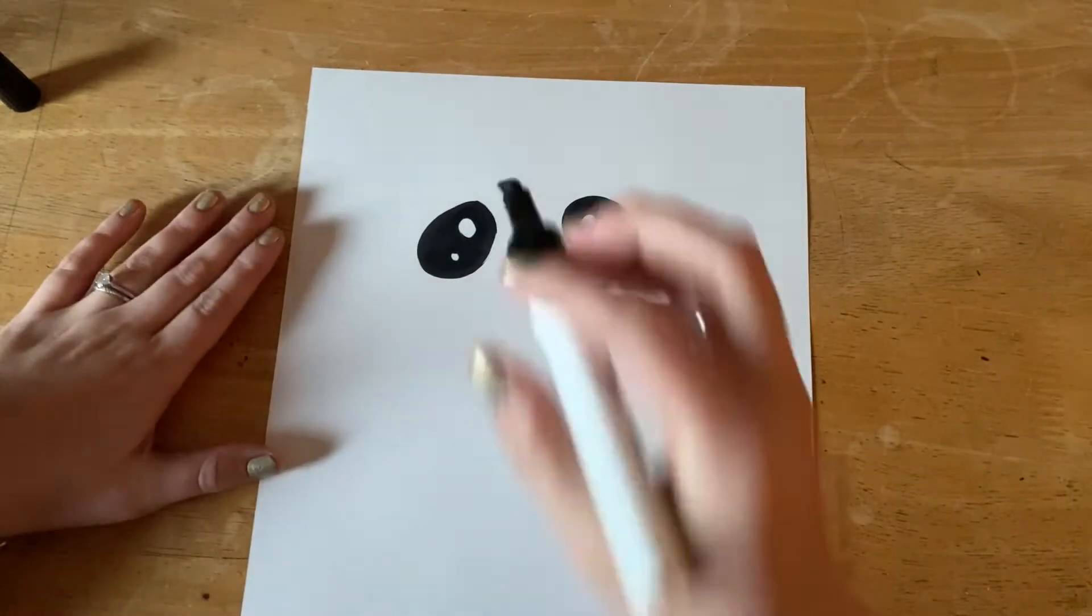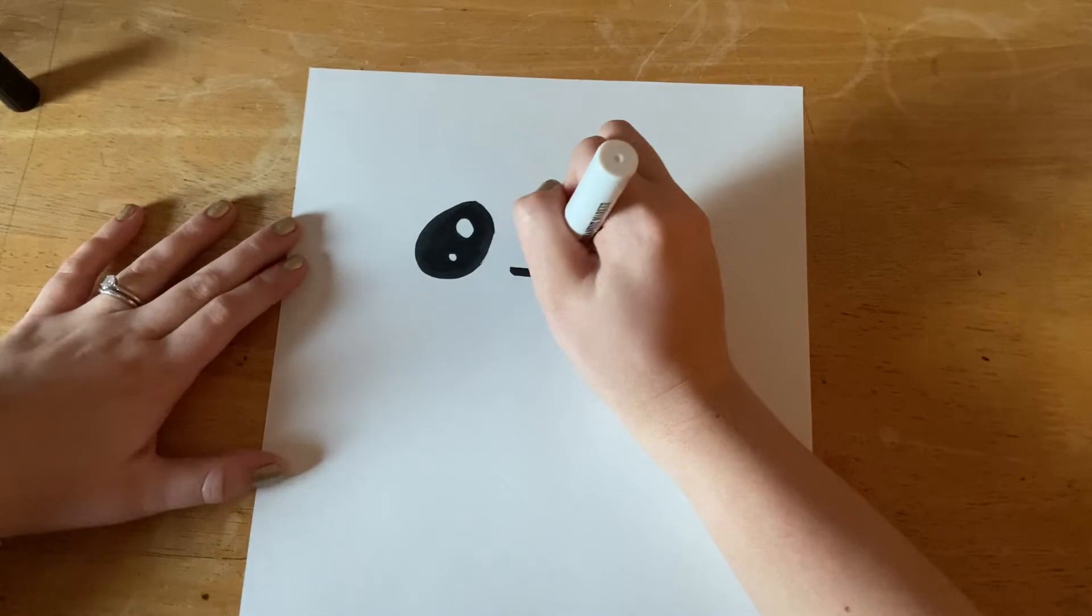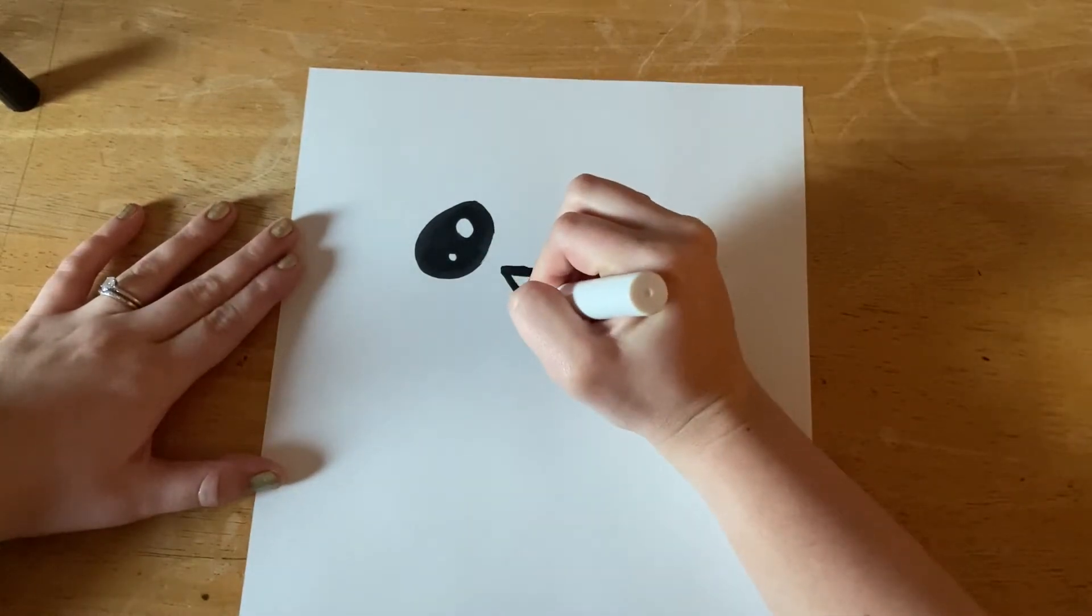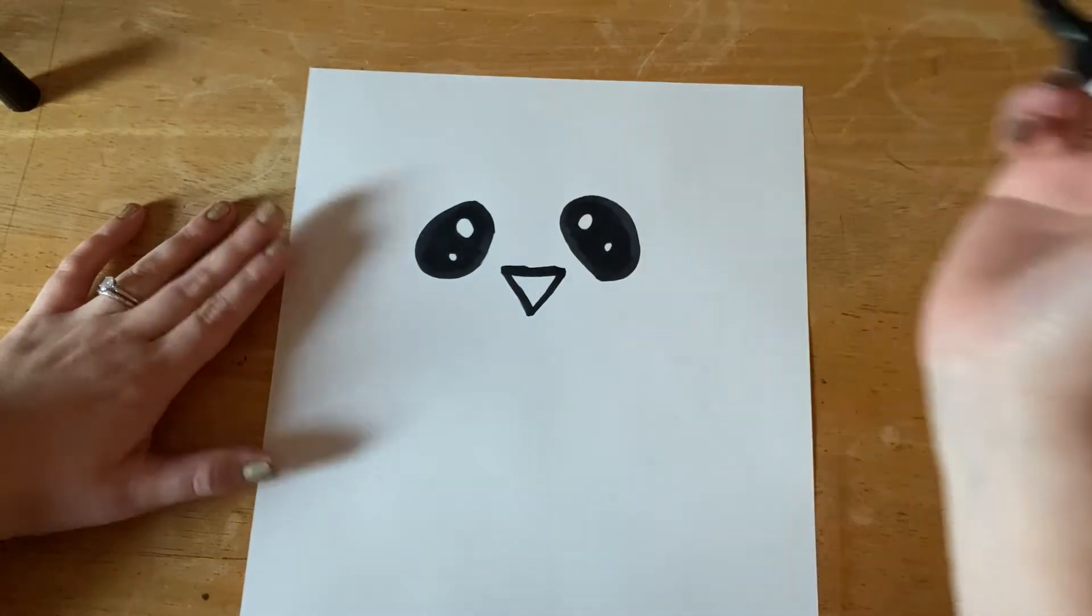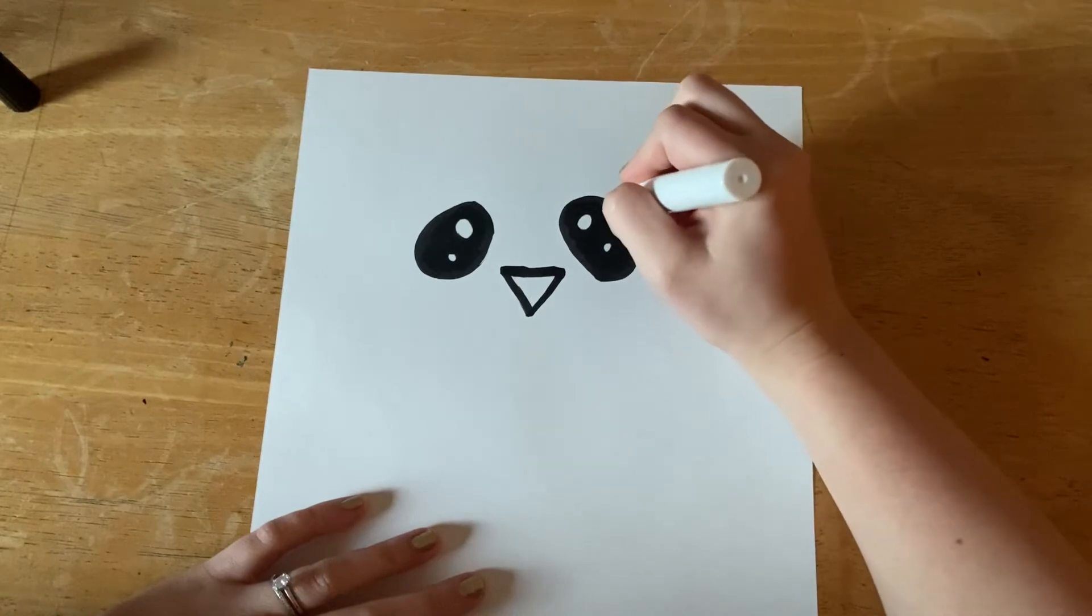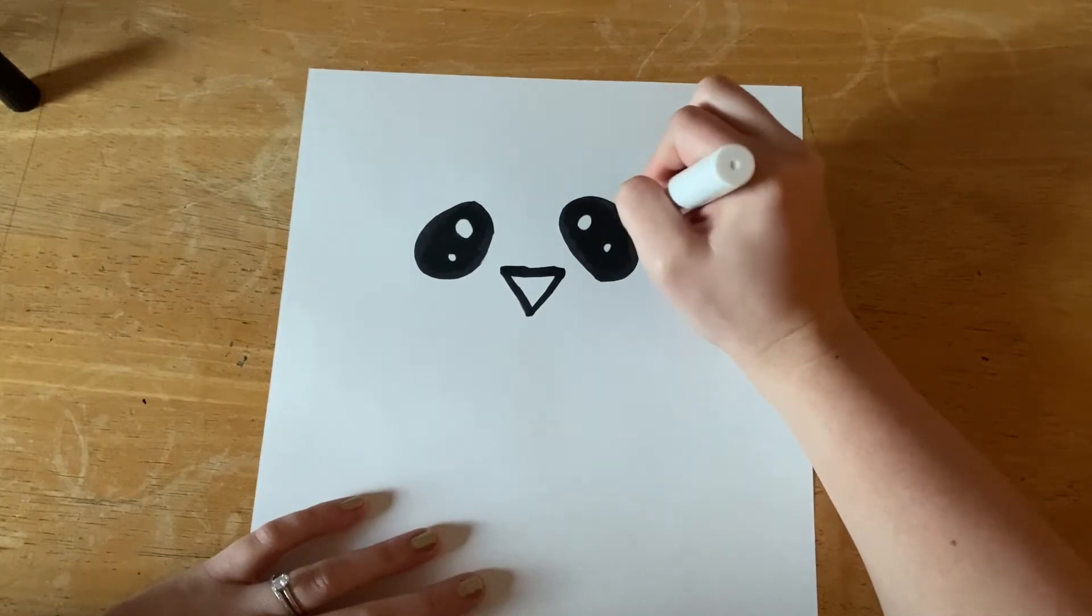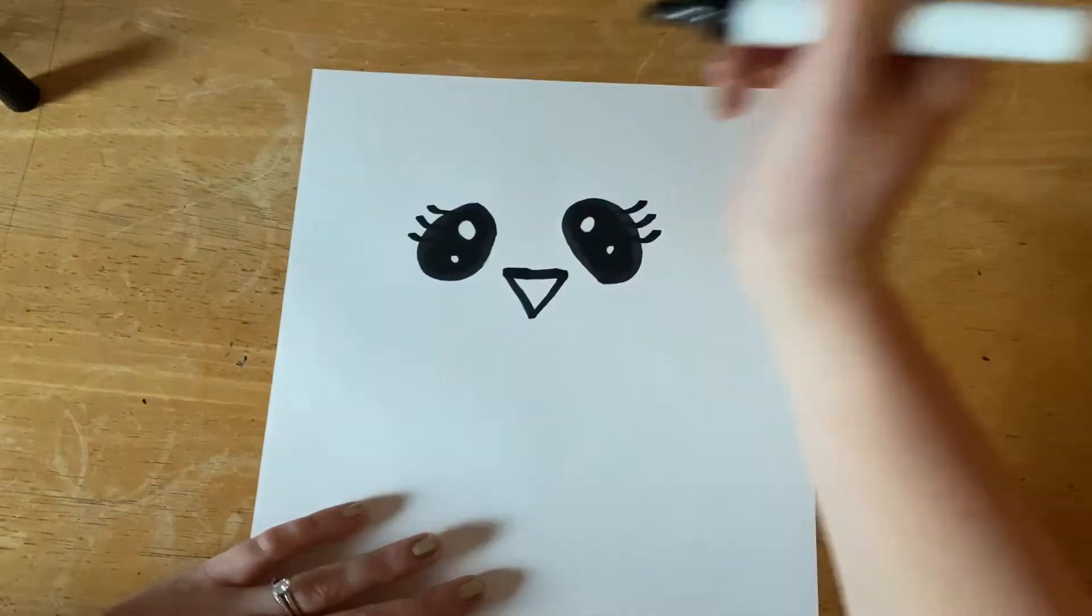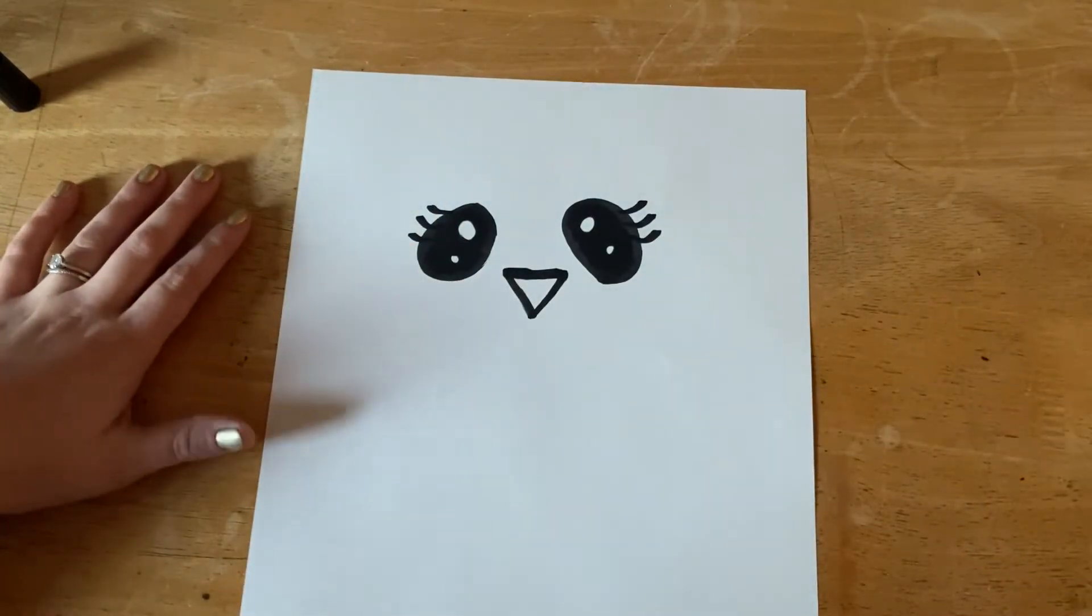After that, let's add a triangle with the point of it going down for our beak. If you want to add eyelashes you can - it's up to you. I'm going to add eyelashes, but you can leave them off though if you want.